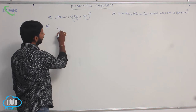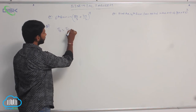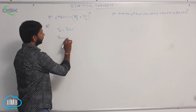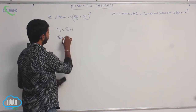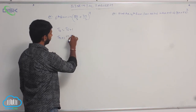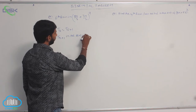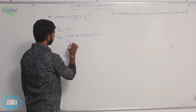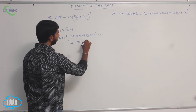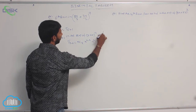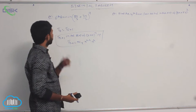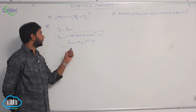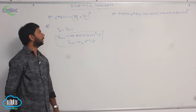The sixth term is T6, which can be written as T(5+1). The general term T(r+1) in the expansion of (x + a)^n is: T(r+1) = nCr · x^(n−r) · a^r.